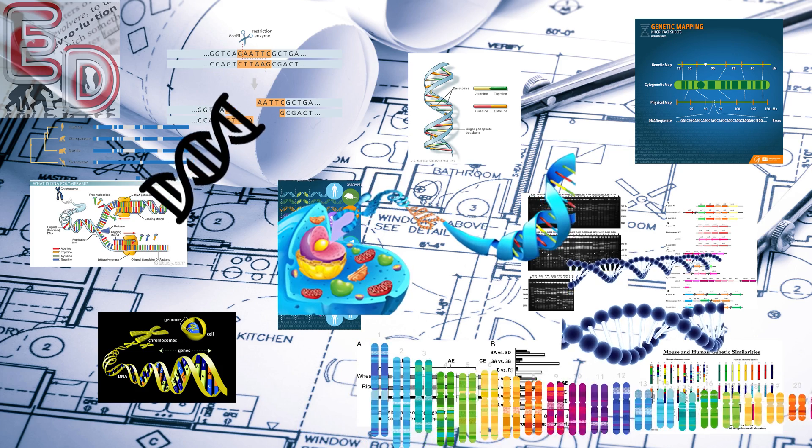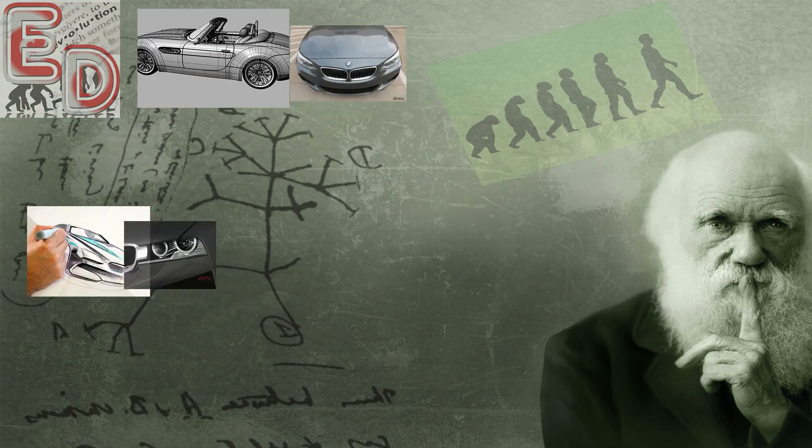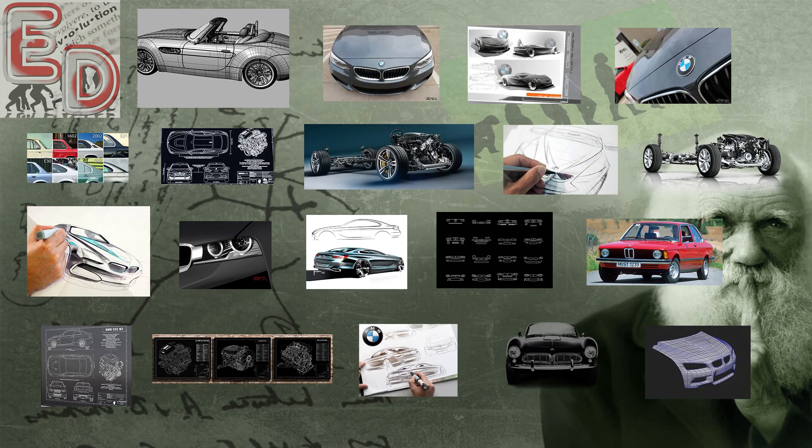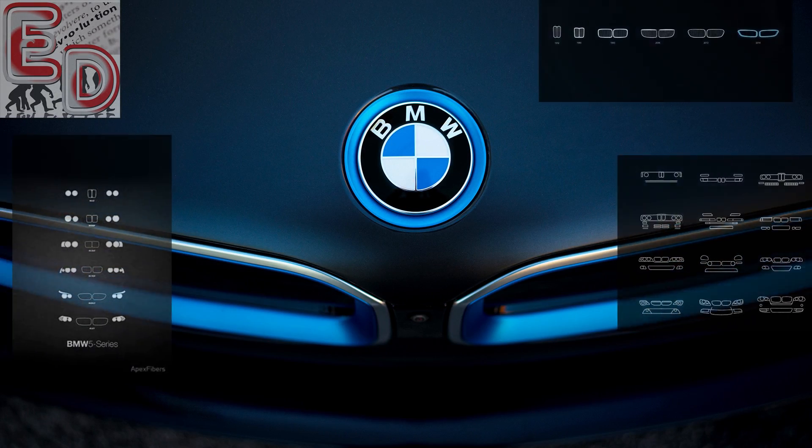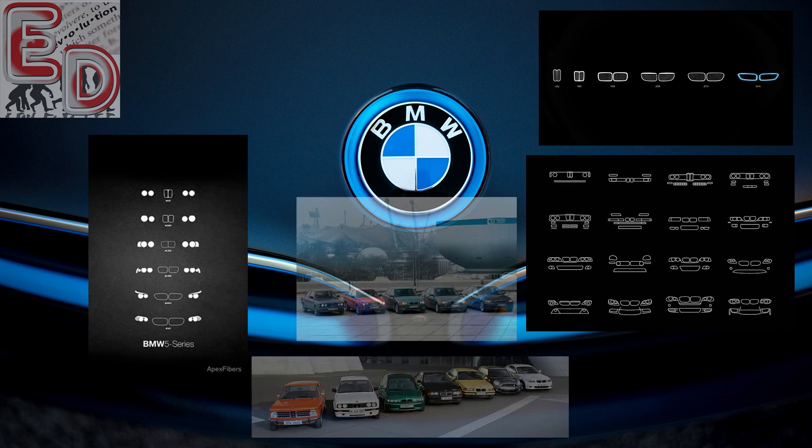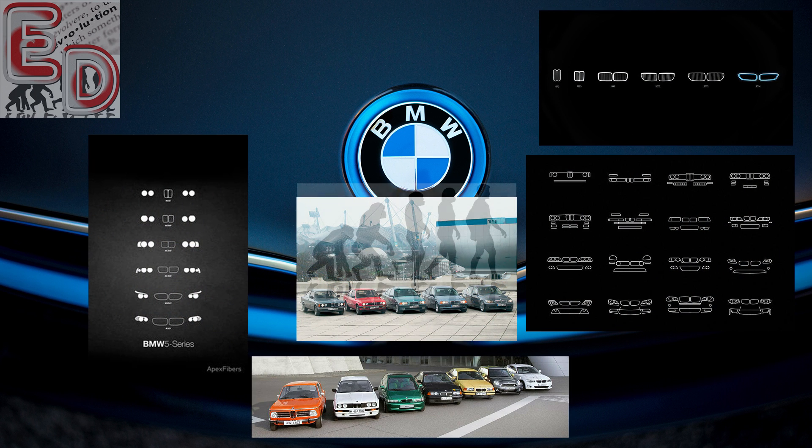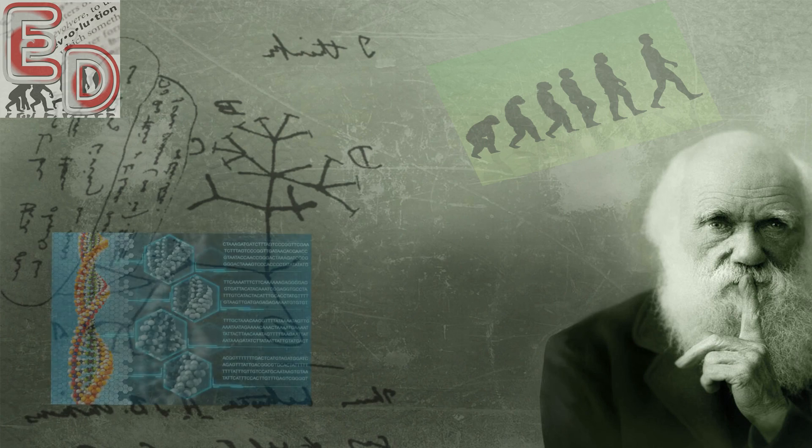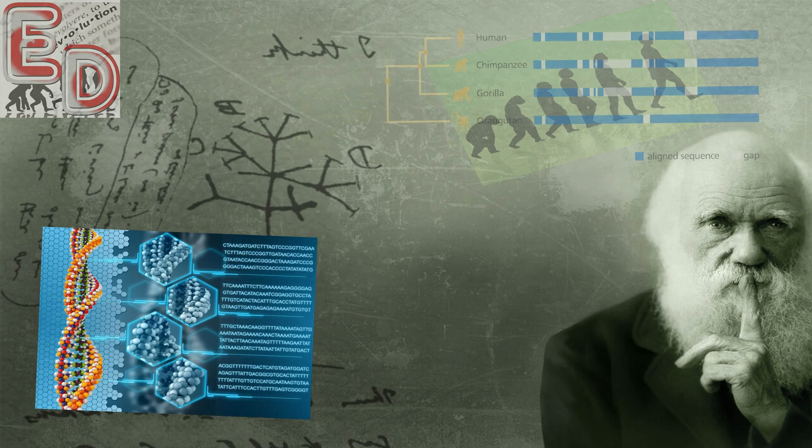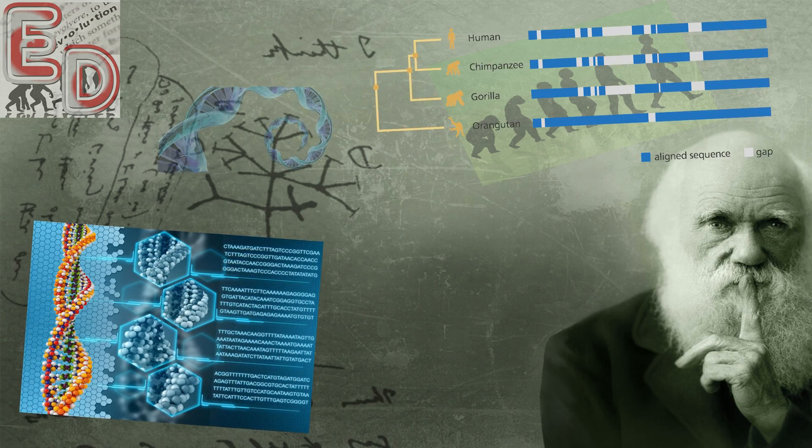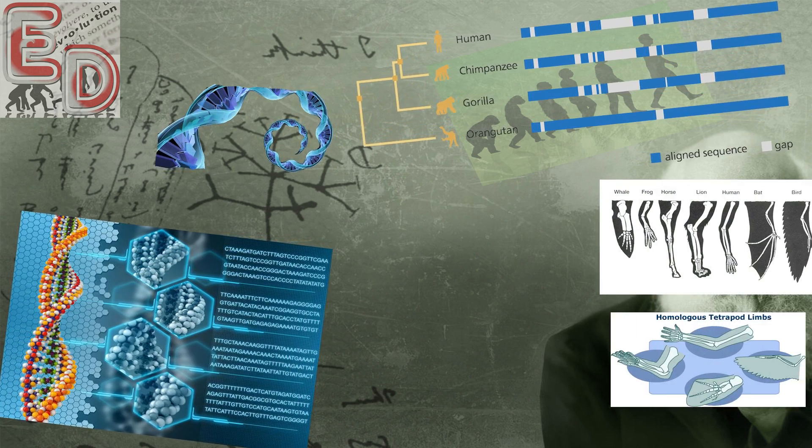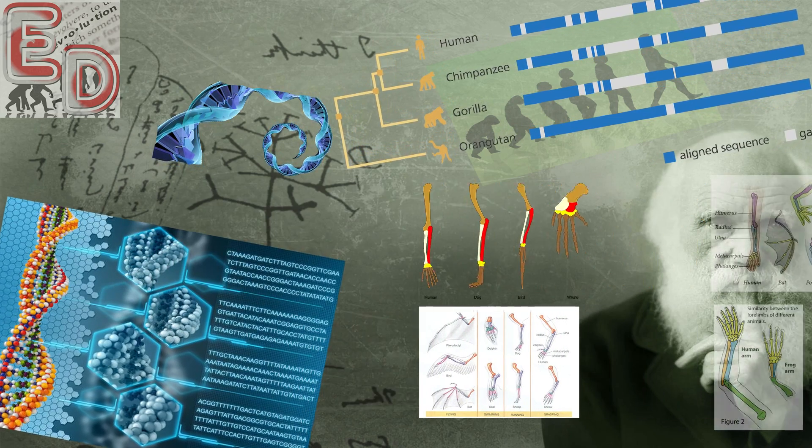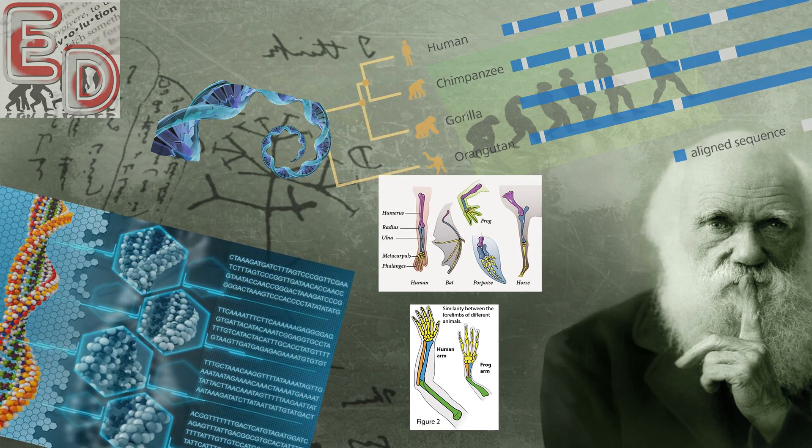This is consistent with observations in the real world. A car manufacturer, for instance, would have common design features among its various models. Does the fact that all BMWs have a kidney grill mean that the German engineers want to deceive us into thinking that their cars all came into being naturally, one model evolving into the next? Of course not. Common genes make more sense when viewed as evidence for a common designer. If a particular design works well, such as the common arm structure including a hinge at the elbow and individual digits at the end, a designer would logically reuse that design in multiple situations.